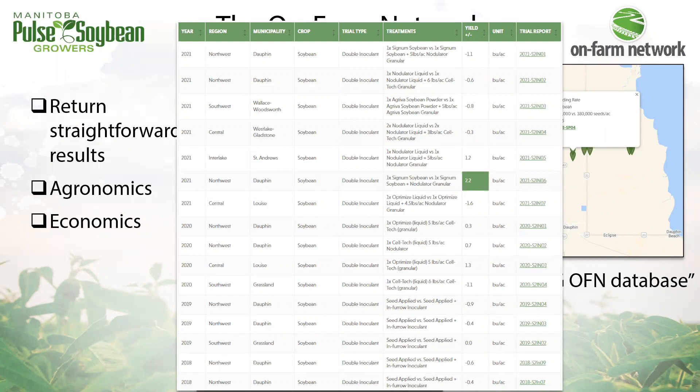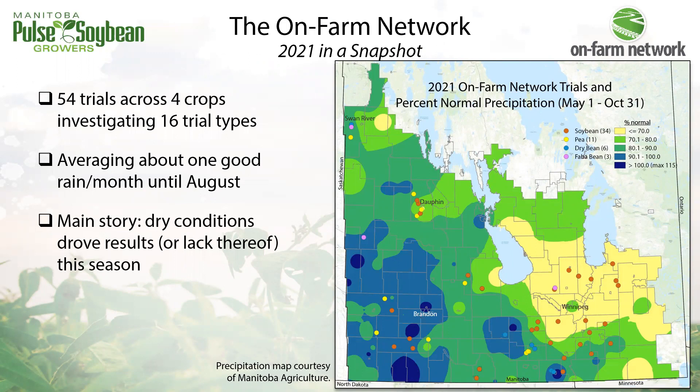Let's get into this last growing season. For the 2021 season specifically, we harvested 54 trials across four crop types and about 16 different trial types. Here is a map of where those trials were by crop on top of the percent normal precipitation from May to end of October. The main story of 2021 is that moisture really drove the results — or the lack thereof — this season.